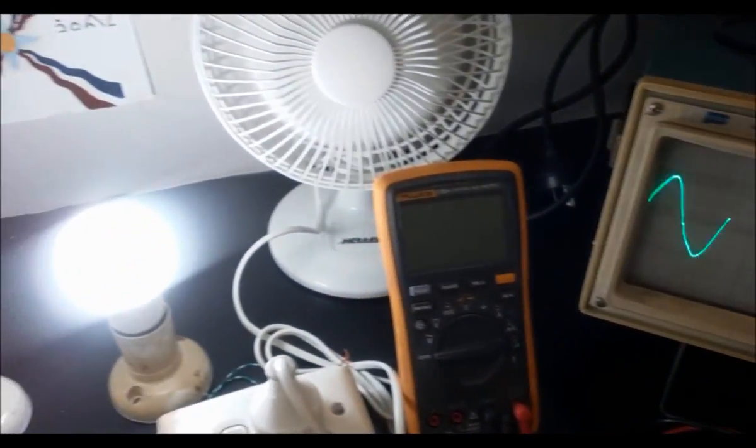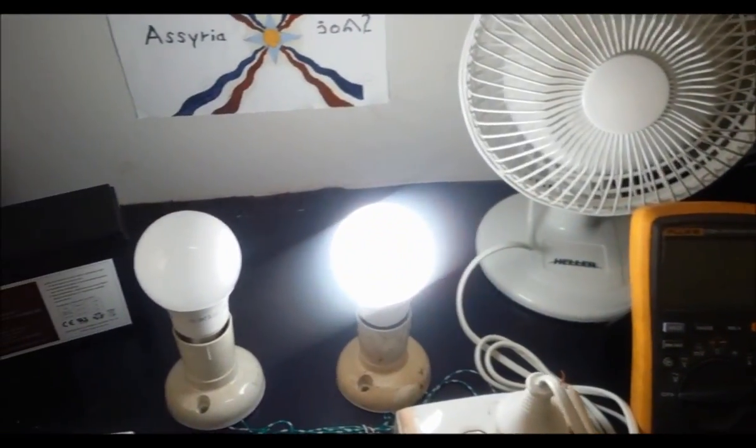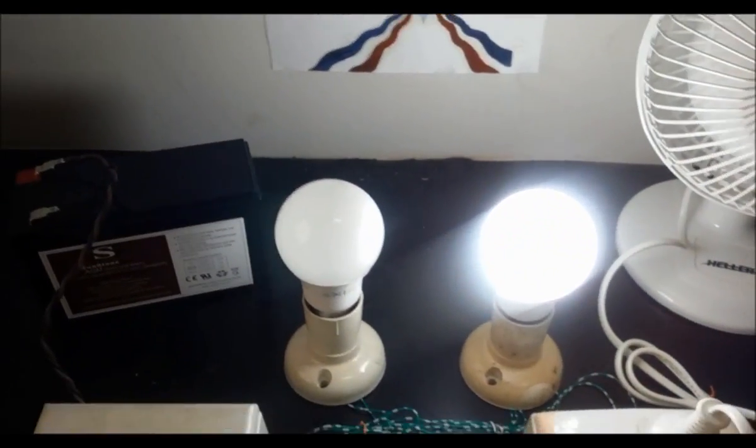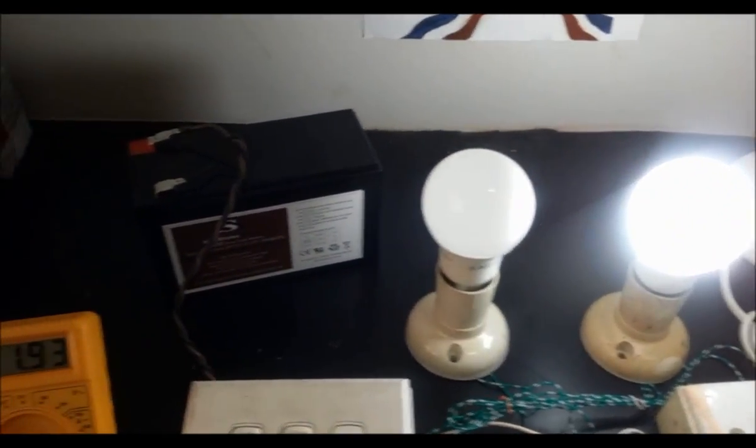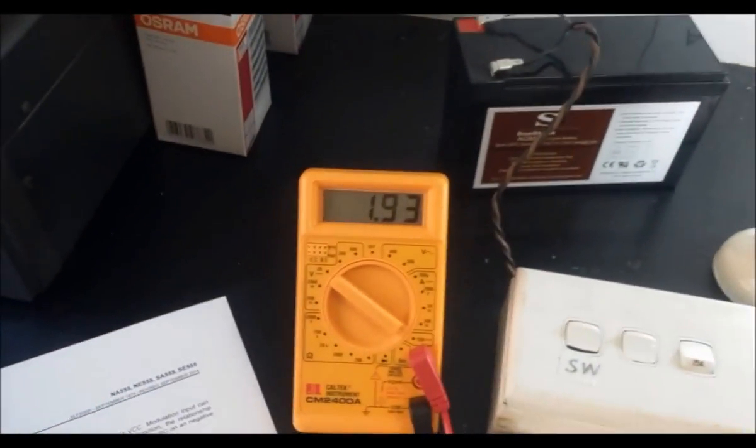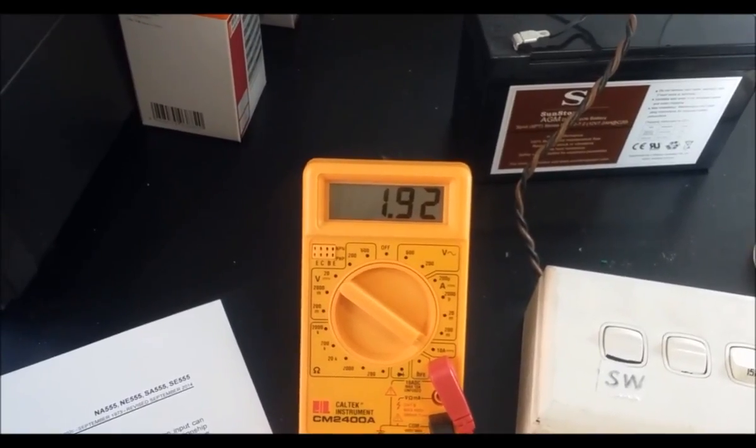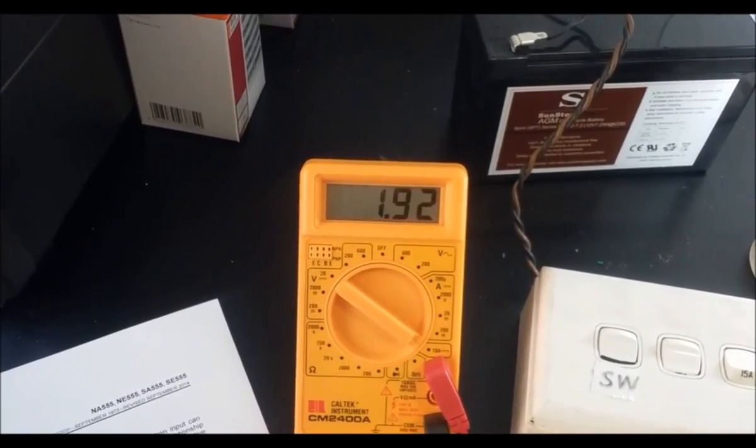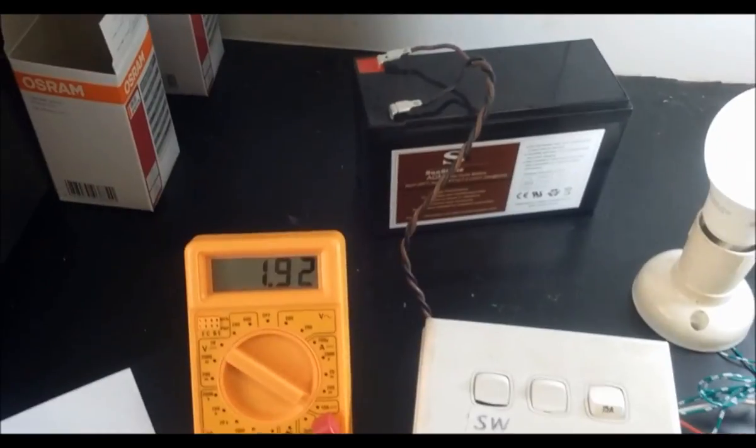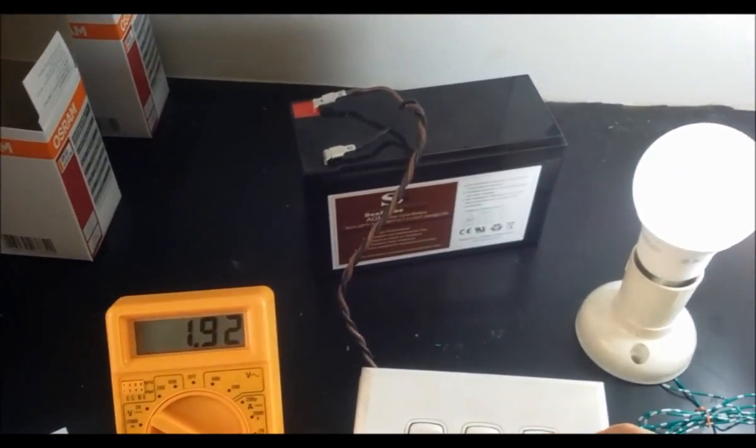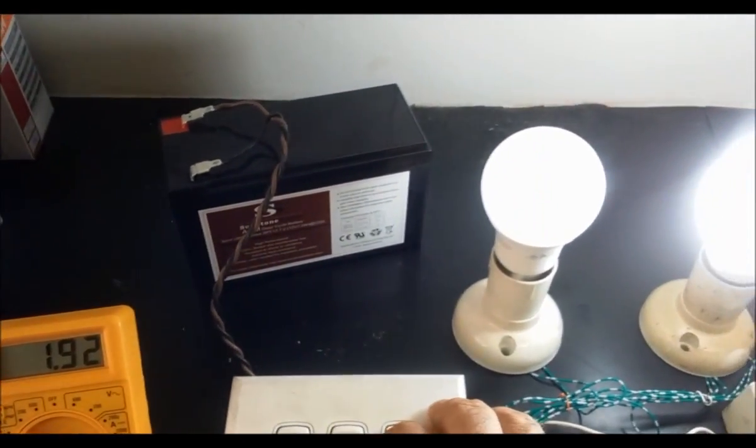Now we are about to increase more. By the way, as we increase the load, the current also goes up. At the moment we are at 1.92 amps, which is taken from the battery. Now we're gonna put the other light on.